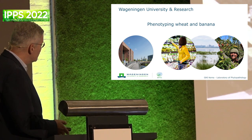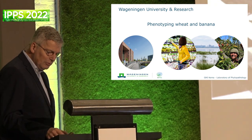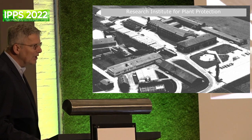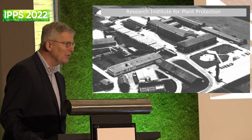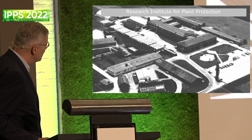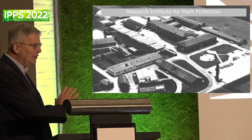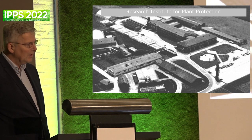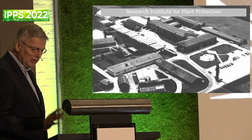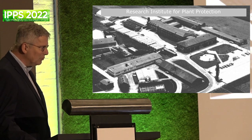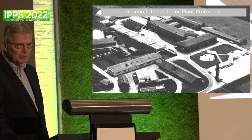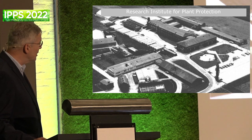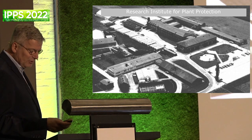The first slide is the Research Institute for Plant Protection - this was the building in Wageningen when I entered for the first time in the early 80s. This was really the center of stripe rust phenotyping. It has since been taken over by other labs, but stripe rust, or yellow rust, in wheat was and still is a major - and increasingly important - pathogen.